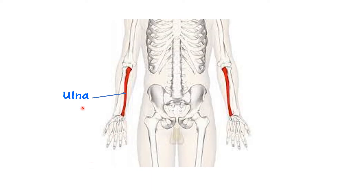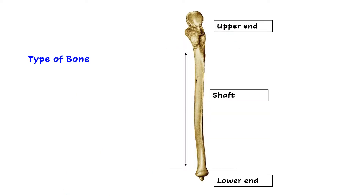Ulna is the bone of the forearm and it is the medial bone of the forearm; the lateral one is the radius. Ulna is a long bone and therefore, like any other long bone, it has got three parts: the upper end, the lower end, and the intervening shaft.